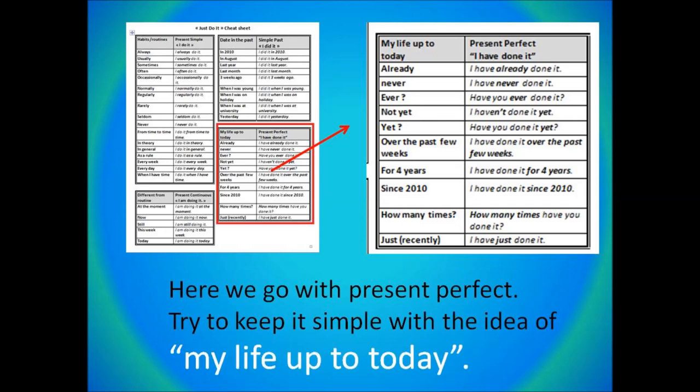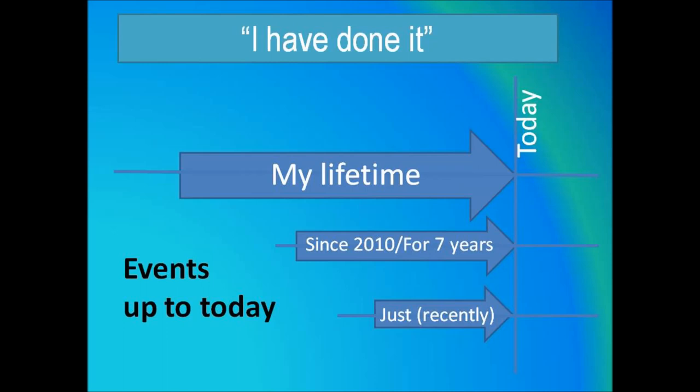Now we're moving on to the present perfect. Here word order is more complicated because we're introducing questions and negative forms. The simple idea here is my life up to today. We generally say that there are three ways to use the present perfect: my life in general, but remember no dates, no details. The second is since and for, the easiest idea for most students. And then the third is just or recently. Get your students to see the connection to the present.